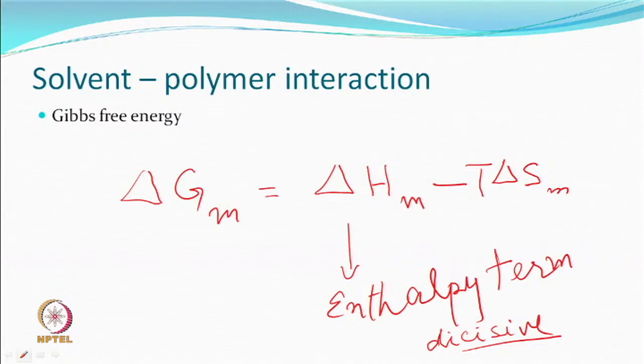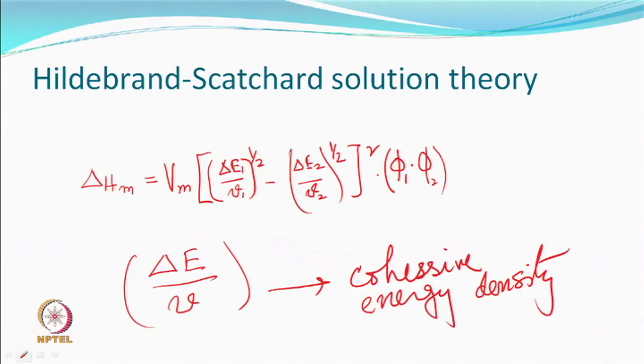Whether your solvent is going to interact with the polymer depends on this. If you take acetone and try to interact with polyester, you find there is hardly any interaction. But if you take metacresol, things can be different — they are going to interact based on whether they 'like' each other. Delta S increases for everything, so dissolution is facilitated as far as delta S is concerned. If you can measure the heat of mixing, you can get an idea whether the solvent is going to really work. There is a solution theory proposed by Hildebrand and Scott which talks about how to calculate the heat of mixing.